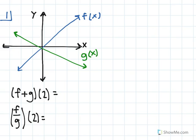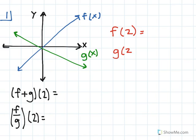Our first problem deals with operations of functions. We're given a graph with the line f of x and g of x, and we're asked to find f plus g of 2 and f divided by g of 2. When you're dealing with operations of functions, you can treat your two functions separately and then perform the operation on them. So when we're looking at f plus g of 2, first we want to find f of 2 and g of 2, and once we find those values, we can perform the operation.